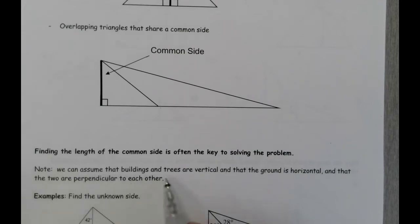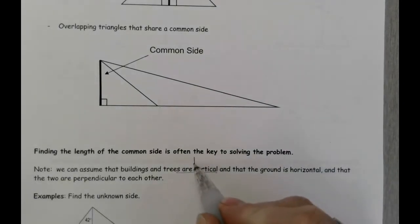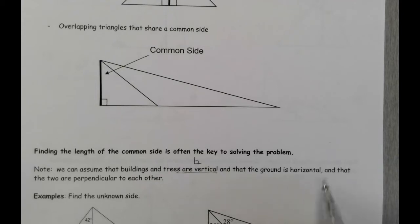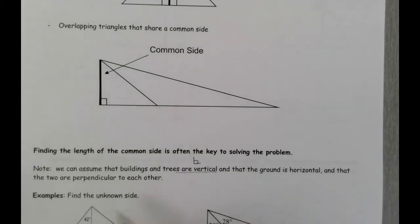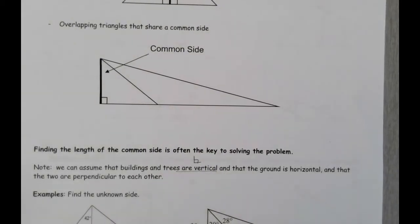Note that we can assume that buildings and trees are vertical — that is, perpendicular to the ground — and that the ground is horizontal, and the two are perpendicular to each other.